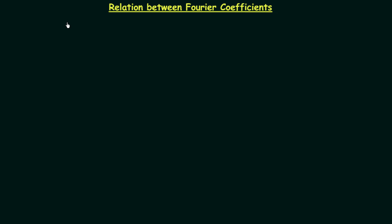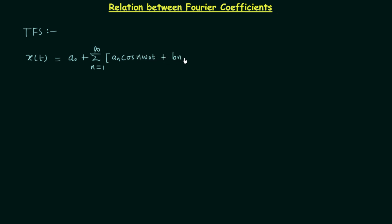In this presentation we will obtain the relation between different Fourier coefficients. For this, I will first write down the trigonometric Fourier series expansion: x(t) = a0 plus summation n equal to 1 to infinity, a_n multiplied by cos(n·ω₀·t) plus b_n multiplied by sin(n·ω₀·t). Here a0, a_n, and b_n are the Fourier coefficients.